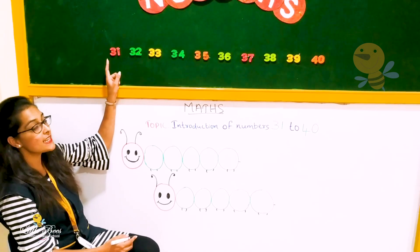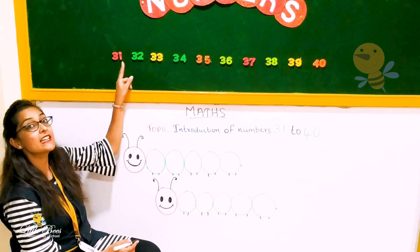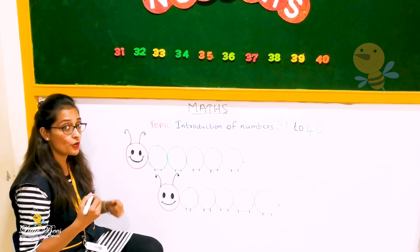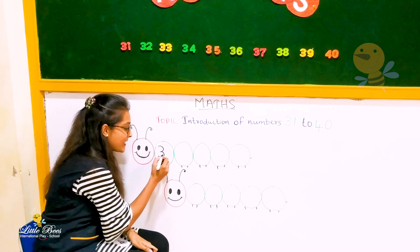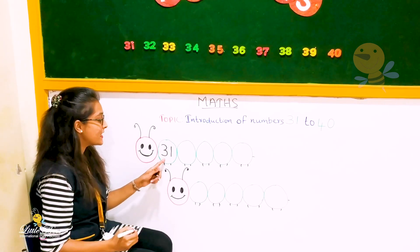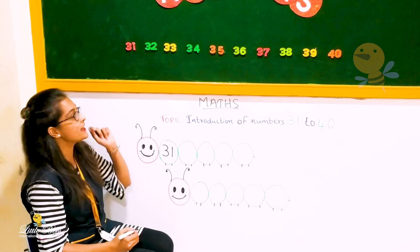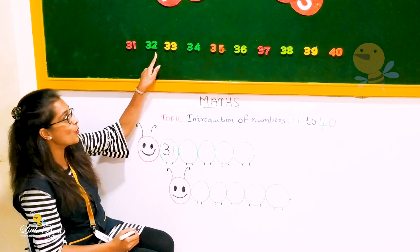So the first number is 3, 1, 31. And how do we write it? 3, 1, 31. Next number. 3, 2, 32.